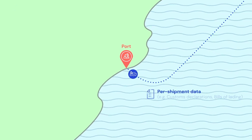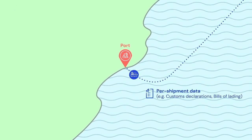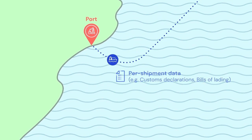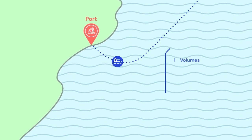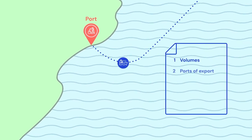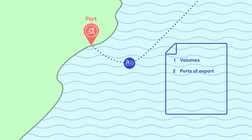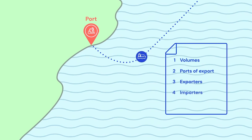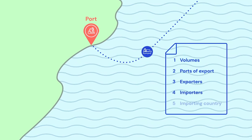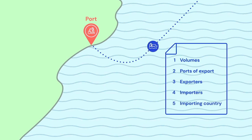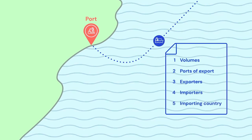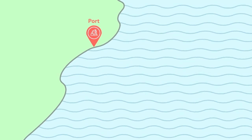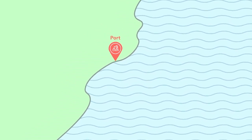First, trade data on shipments are the backbone, which provide information on the volumes of commodities, ports of export, exporters, importers, and importing countries such as China or Germany. This is the starting point for all supply chain mapping.